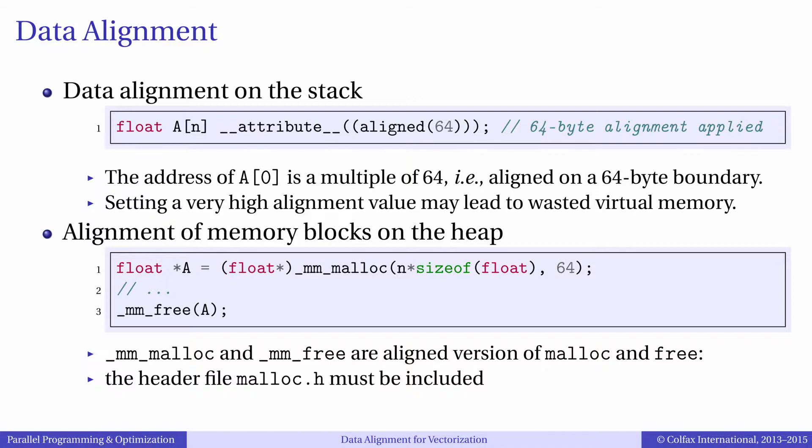Such an array will be useful in vector calculations. If you need an aligned array on the heap, you can use a special memory allocator, mm_malloc. It takes two arguments: the size of the required array and the required alignment value in bytes. Arrays allocated with mm_malloc must be deallocated with a special deallocator mm_free.